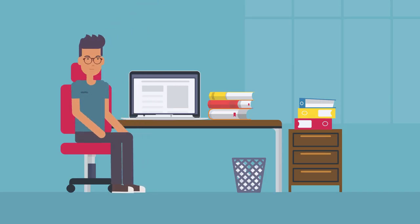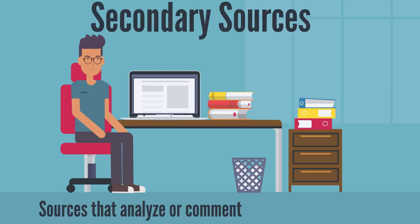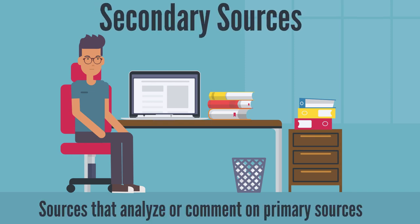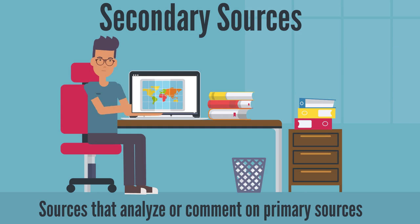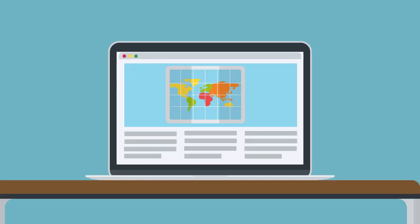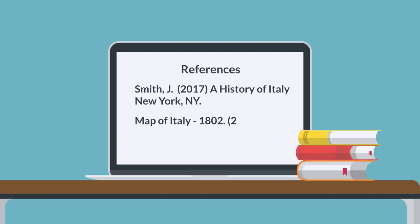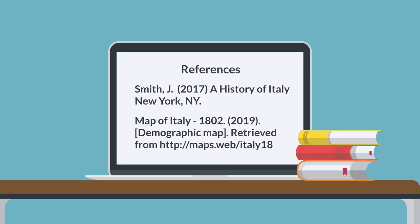If your narrative requires additional research on a topic or issue, you will also need secondary sources, which are sources that analyze or comment on primary sources. Many books, journal articles, and reliable online resources can provide this additional insight. Be sure to evaluate every source for credibility. Write down the title, author, and all relevant information about every source so that you can give credit to that resource as part of your digital story.